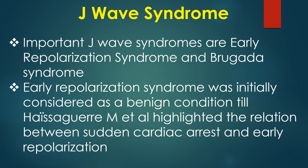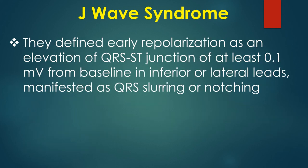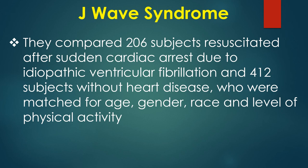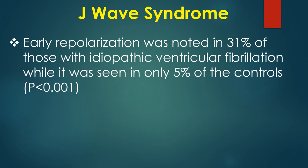Early repolarization syndrome was initially considered a benign condition, until Haissaguerre and associates highlighted the relation between sudden cardiac arrest and early repolarization. They defined early repolarization as an elevation of the QRS-ST junction of at least 0.1 mV from baseline in inferior or lateral leads, manifested as QRS slurring or notching. They compared 206 subjects resuscitated after sudden cardiac arrest due to idiopathic ventricular fibrillation and 412 matched controls. Early repolarization was noted in 31% of those with idiopathic ventricular fibrillation while it was seen in only 5% of controls.